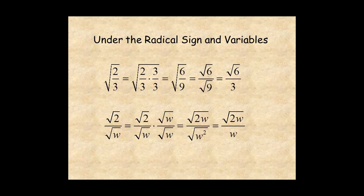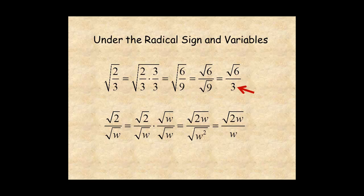The first example shows how to rationalize under the radical. Multiply under the radical by 3 over 3. This becomes 6 over 9. Then use the quotient property to make this radical 6 over radical 9, which becomes radical 6 over 3. The second example shows how to rationalize with a variable. Remember, a variable is a number. So multiply by radical W over radical W. The denominator becomes radical W squared, which is W.